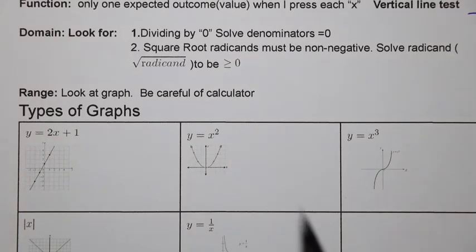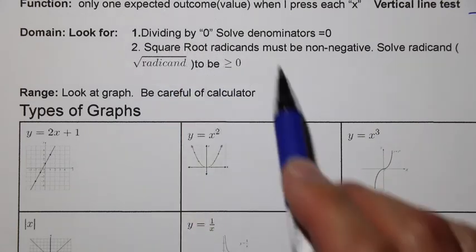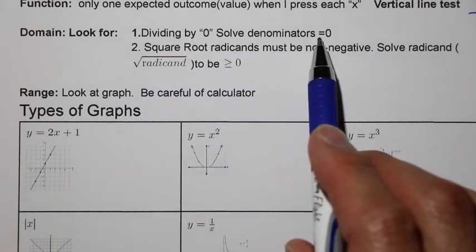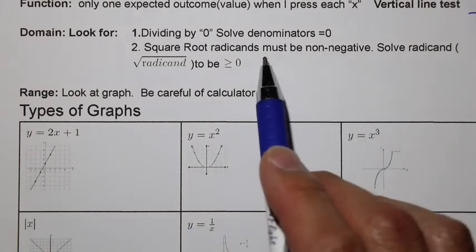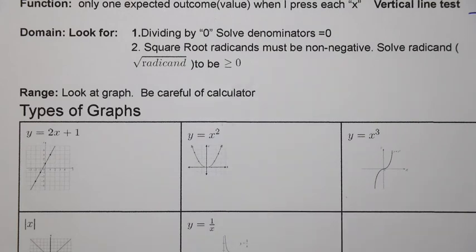If we're looking for the domain, then we're looking for two main things: dividing by zero and taking the square root of a negative. We can't take the square root of a negative. We can't divide by zero. So we solve those denominators that could equal zero. We take those x values, those are restrictions, and they can't be those values. And we solve the radicand to be greater than or equal to zero, and those are restrictions on the x.